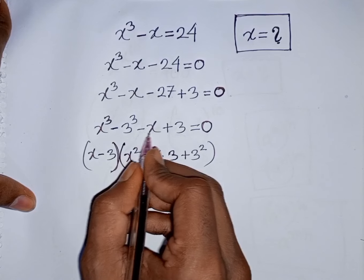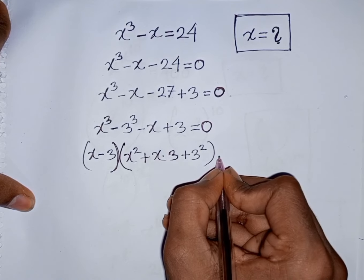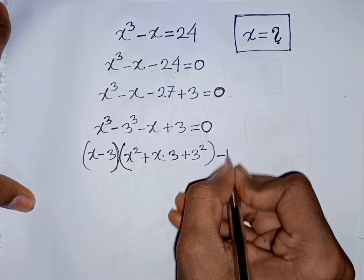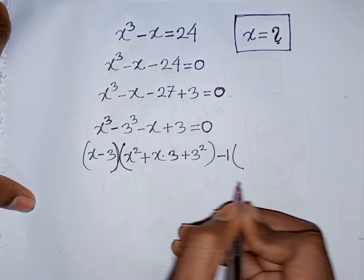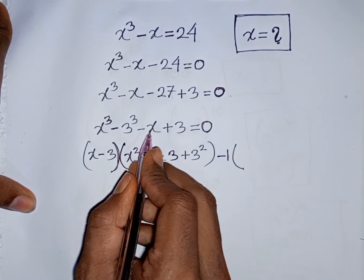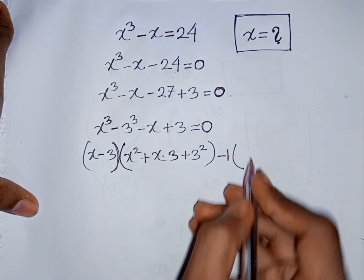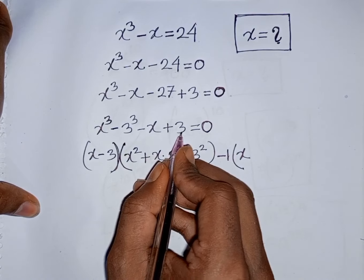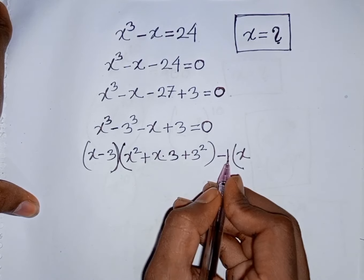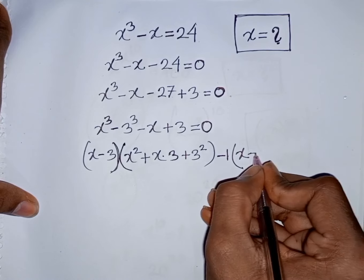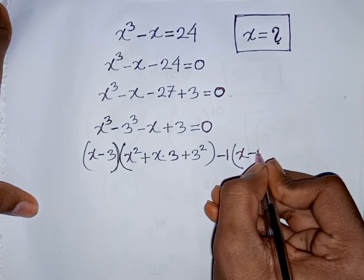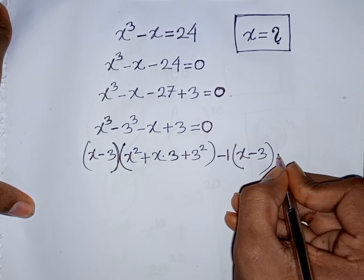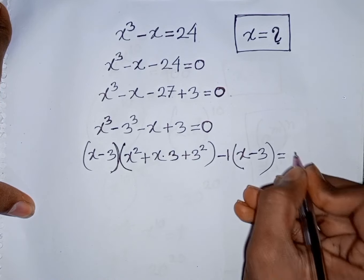From here, we take common minus 1. So minus 1 is out of the bracket. This divided by this — that means it will be x. Then plus 3 divided by minus 1, that means it will be minus 3. Bracket close is equal to 0.